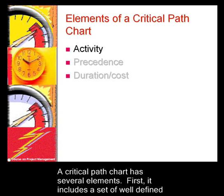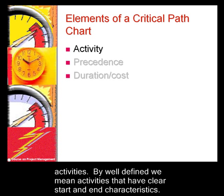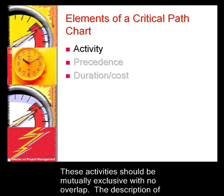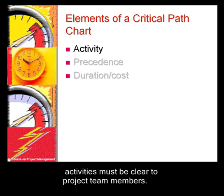A critical path chart has several elements. First, it includes a set of well-defined activities. By well-defined, we mean activities that have clear start and end characteristics. These activities should be mutually exclusive with no overlap. The description of activities must be clear to project team members.